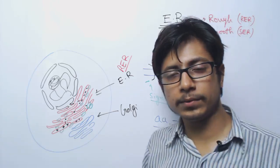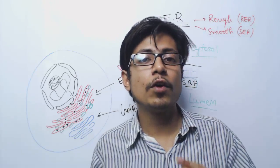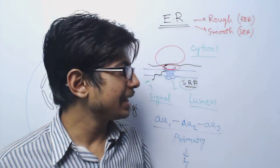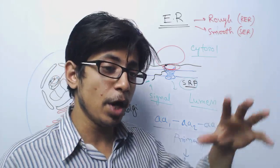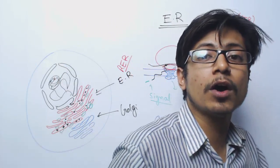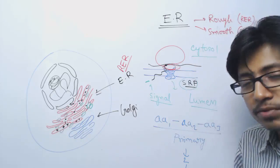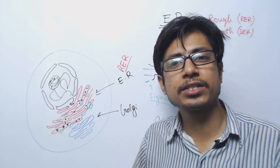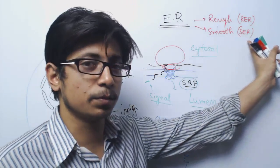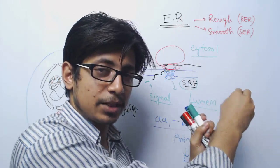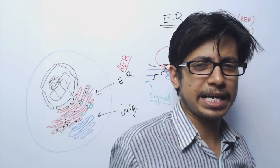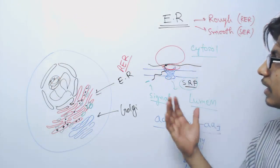The smooth endoplasmic reticulum is also important for producing certain molecules. It helps in the production of phospholipids and sterols. Smooth ER is important for the modification and storage of steroids, as well as storage of calcium. The smooth endoplasmic reticulum is most often the highest reservoir of stored calcium inside the cell. So smooth ER stores calcium and steroids, and also helps in the production of steroids and phospholipids to some extent.